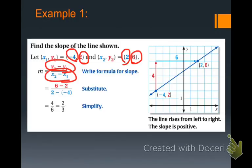6 minus 2 is 4, and 2 minus a negative 4 is 2 plus 4, or 6. And 4 over 6 can be reduced to 2 over 3, or 2 thirds. So our slope is 2 thirds.